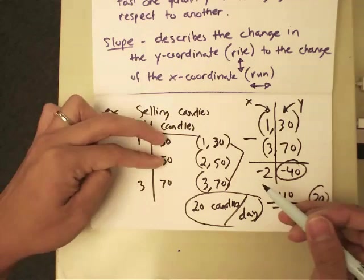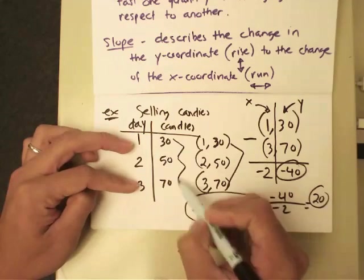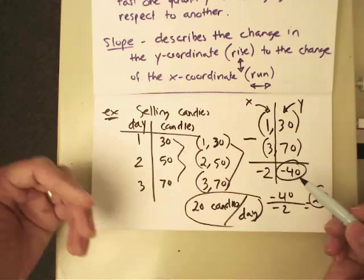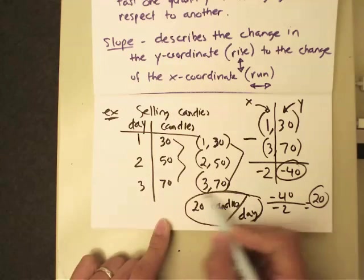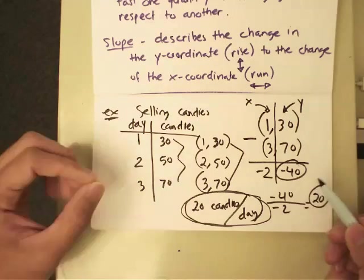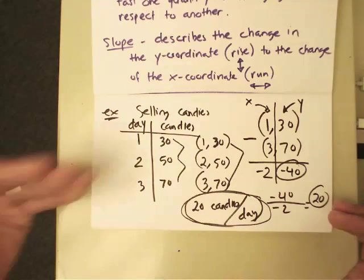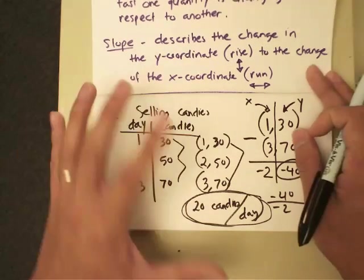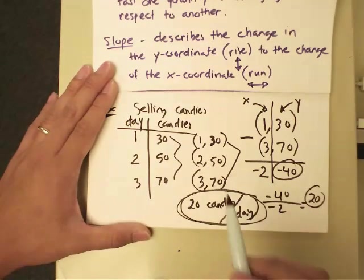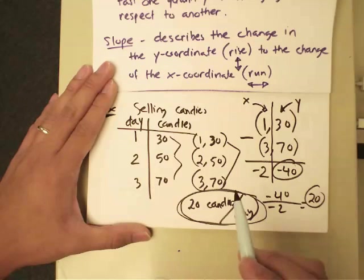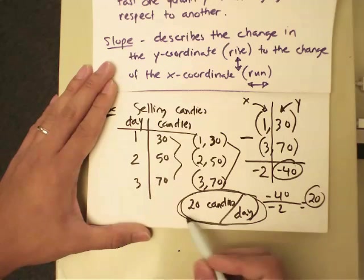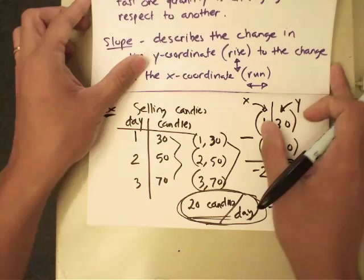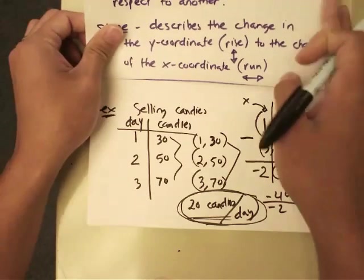To measure how many candies you can sell per day — that's the rate of change. So it's candies over days: negative 40 over negative 2, which gives you 20 candies per day. Every day that you sell candies the difference is 20, and it's a positive difference because you are increasing, not decreasing. That's why the rate of change is positive. If you were to graph these points you'd also see a positive change. Remember, you can pick any two points and get the same result.